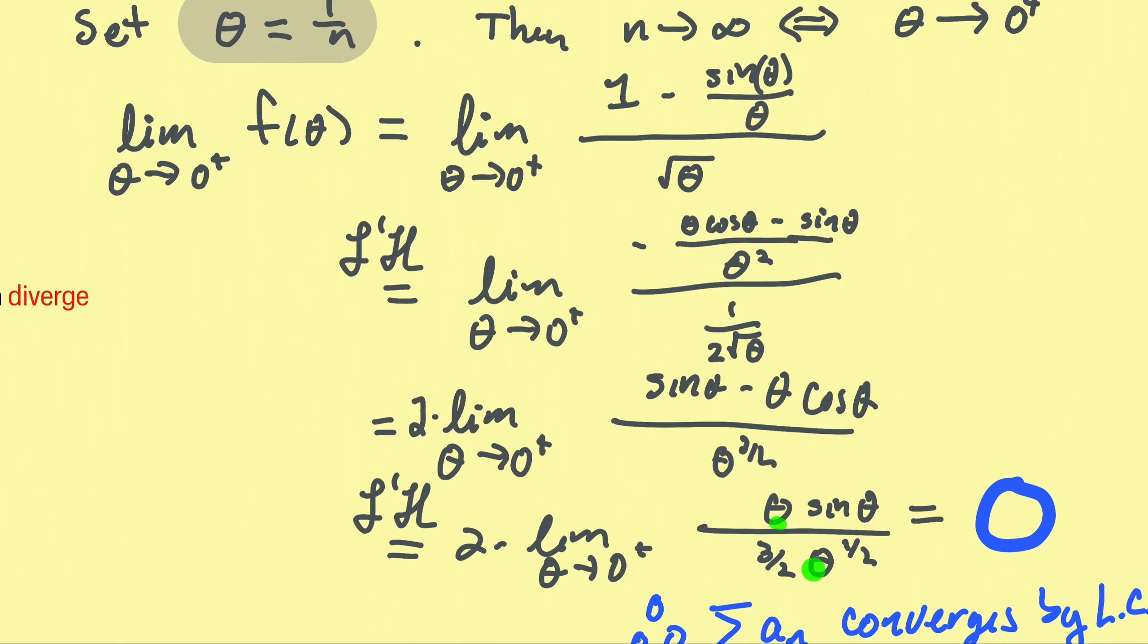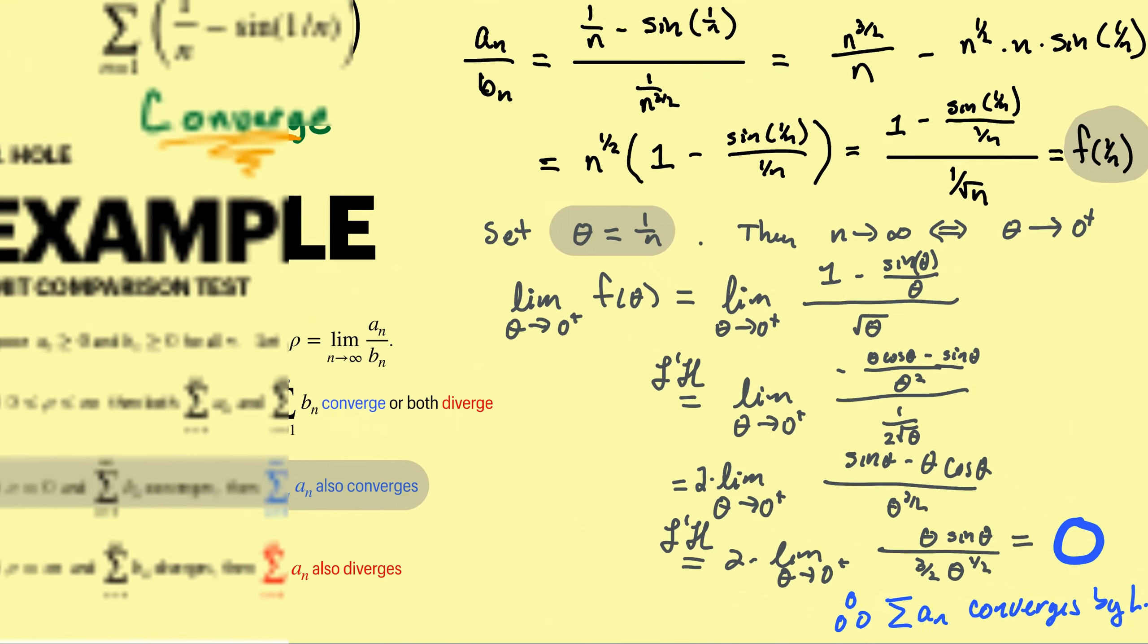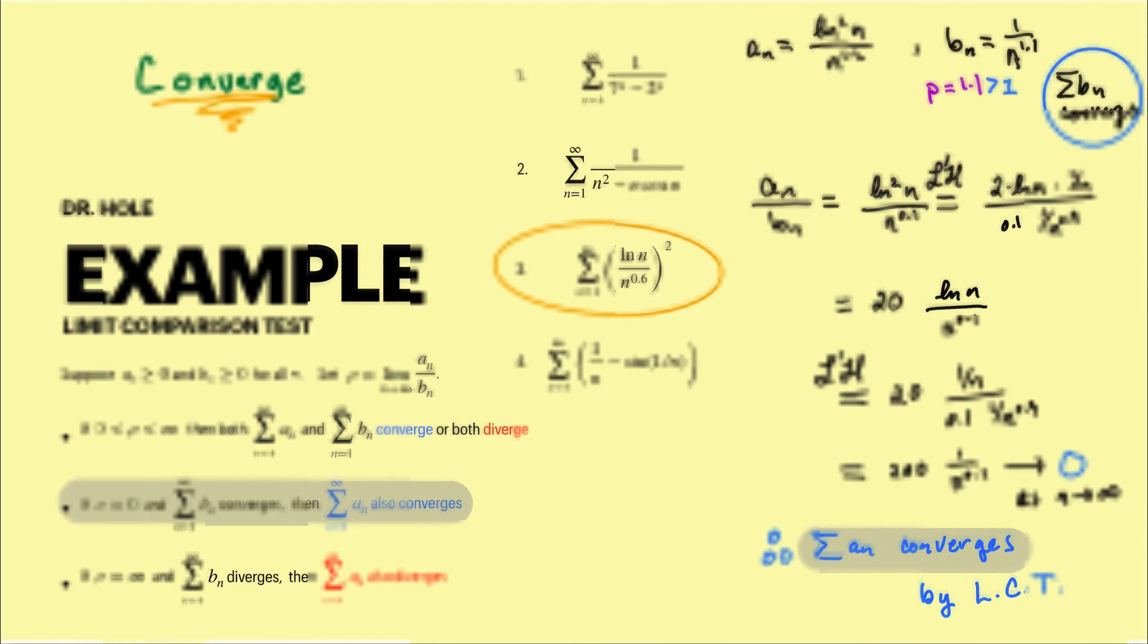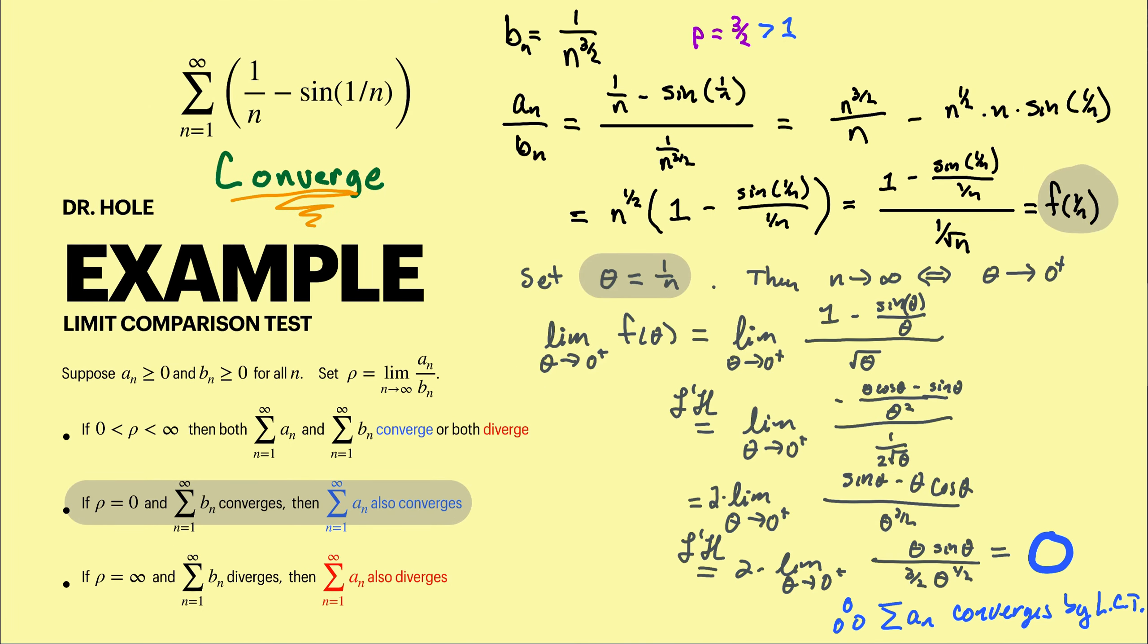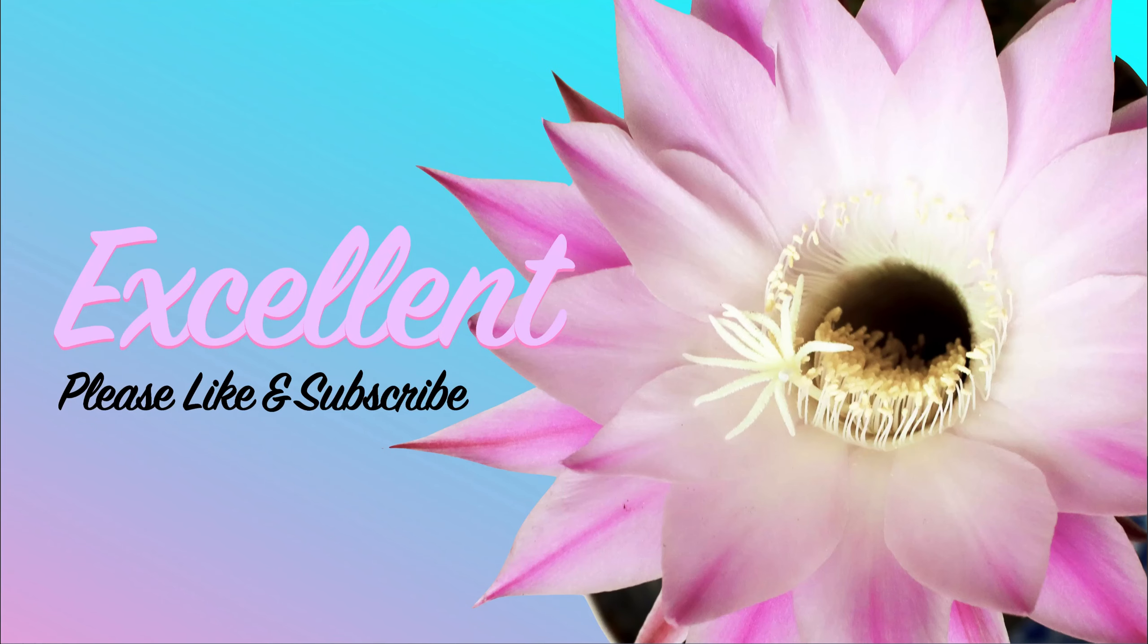Thus theta over theta to the one half is going to leave us with a theta to the one half in the numerator. We're now ready to take the limit. Theta to the one half times sine of theta is zero. So what did we finally come up with? We finally got our limit rho equaling zero. Going back, what did we use for our b_n? A P series with P greater than one. Therefore the b_n's define a series which converges, and by LCT, having achieved rho equal zero, the a_n's also define a convergent series.